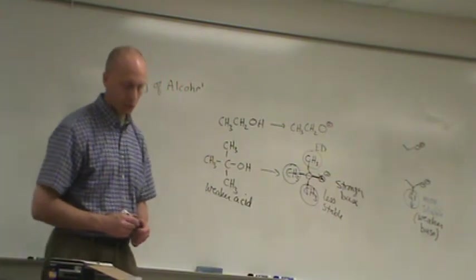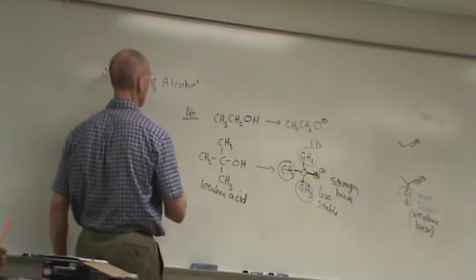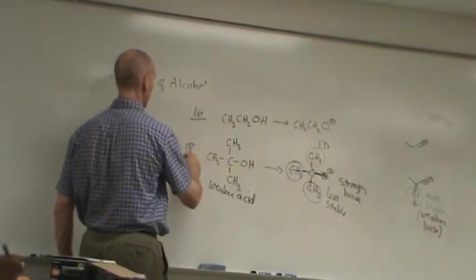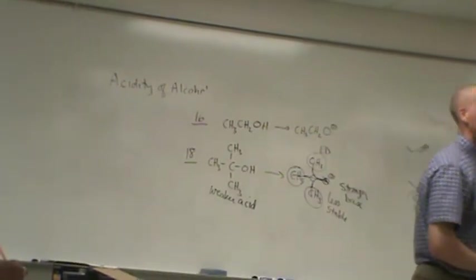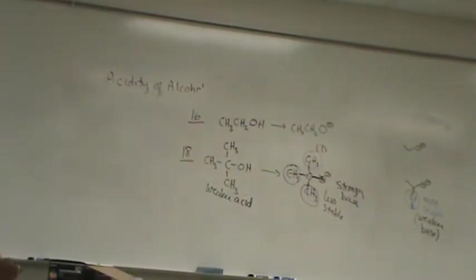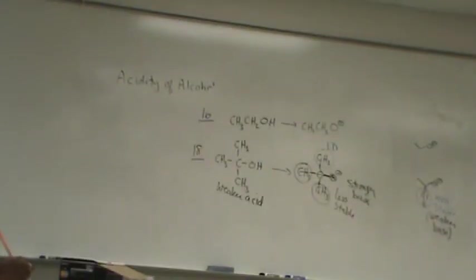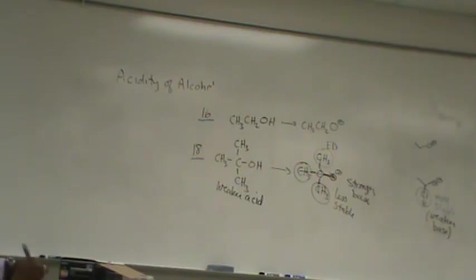So this here is a stronger base than the ethoxide ion is. And so what does it make this acid over here? A weaker acid. So just to give you some values, the pKa of ethanol is 16. Of t-butanol, it goes up to 18, two units. So you can see the power of those methyl groups of their electron donating ability.